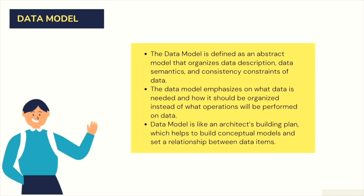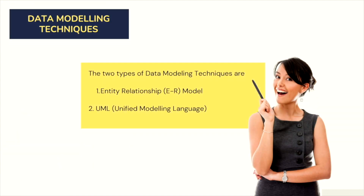The data model is defined as an abstract model that organizes data description, data semantics, and consistency constraints of data. It emphasizes what data is needed and how it should be organized, rather than what operations will be performed. A data model is like an architect's building plan, helping to build conceptual models and set relationships between data items. There are mainly two data modeling techniques: entity relationship model and UML, or unified modeling language.